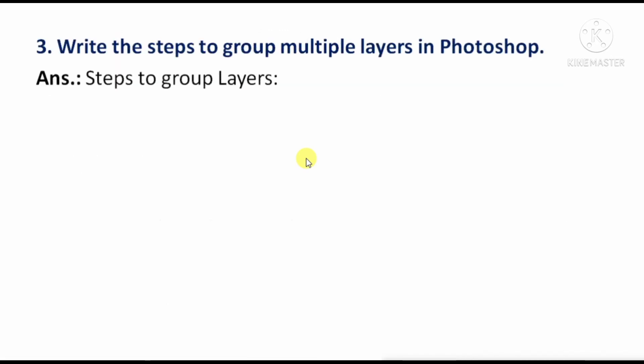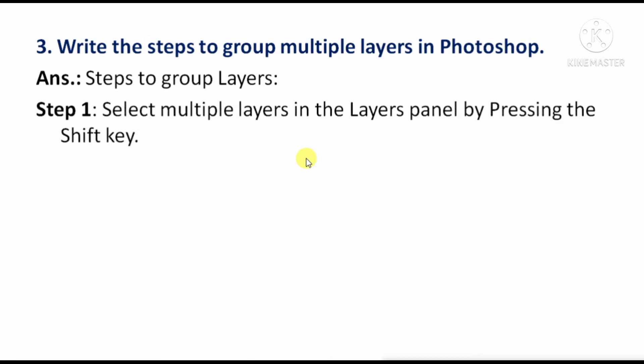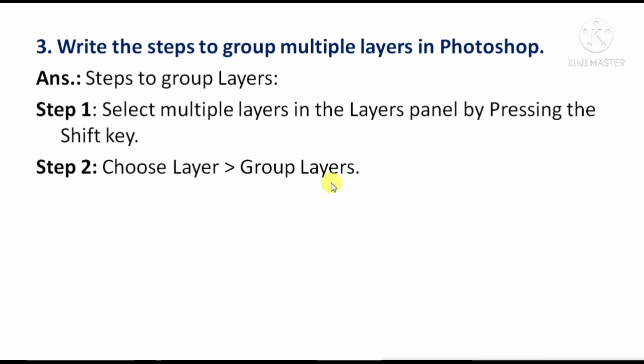Next: Write the steps to group multiple layers. To select multiple layers, press the Shift key and select the layers. Then go to the Layers menu and click on the 'Group Layers' option. In this way you can group the layers.